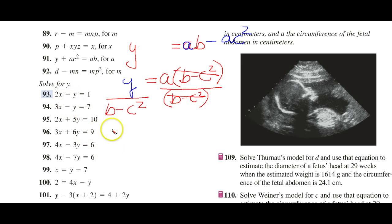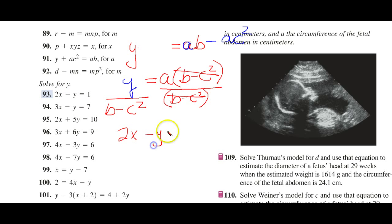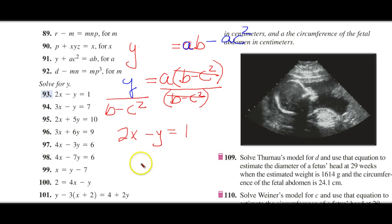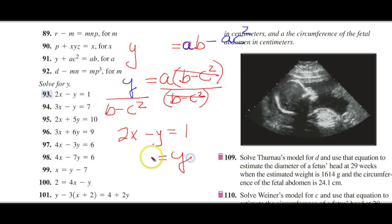Now, over here, they want us to solve for the letter Y. So, we have 2X minus Y equals 1. Again, we want our Y to be positive. So, we know we can just move it to the other side. And it becomes positive.